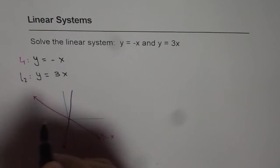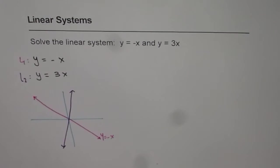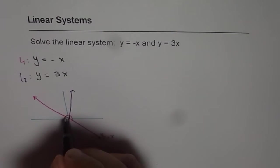So let me say this is line 2 for us. As you can clearly see that both these lines intersect at origin. So that is our solution.